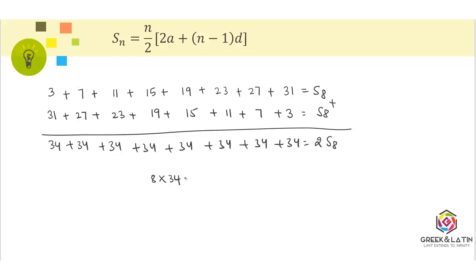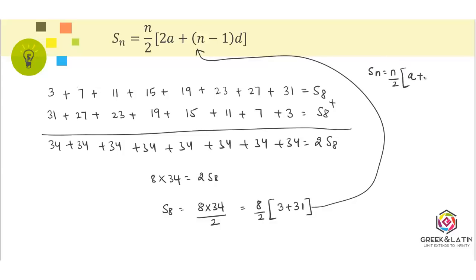Our S8 is 8 times 34 divided by 2. This can be written as 8 divided by 2 times 34, where 34 can be written as 3 plus 31. Now I think we are in a position to relate this with the formula. This is nothing but Sn equals n by 2 times the first term plus the last term L.